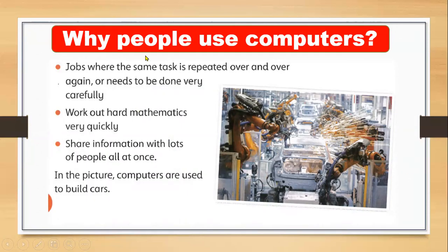Why do people use computers? Because computers make our work easier. Jobs where the same task is repeated over and over, or tasks that need to be done very carefully, are ideal for computers. Computers can work very accurately and can solve hard mathematics problems very quickly.